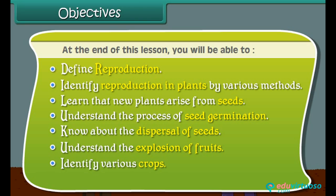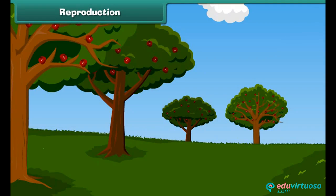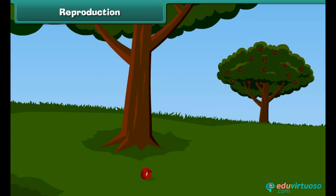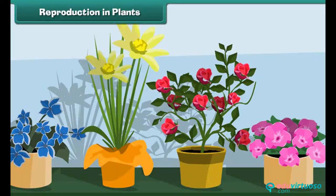Identify various crops, discuss how to get good yield from crops. Reproduction: the process by which an organism produces new organisms of its own kind is known as reproduction. Reproduction in plants.